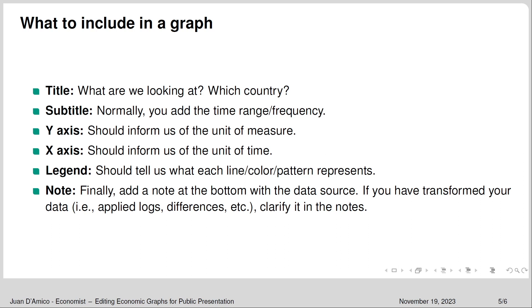We have the x-axis, which should inform us of the unit of time — is it quarterly data, is it months, is it years, is it days? A legend, which should tell us what each line, color, or pattern represents. Anytime I see a line in a graph I need to know what variable I'm looking at. Finally, we're going to include a note, which is commonly added at the bottom of the graphic.